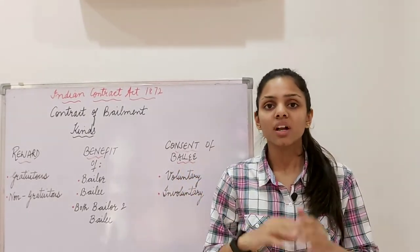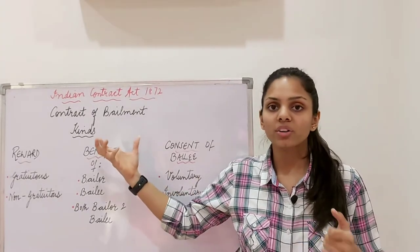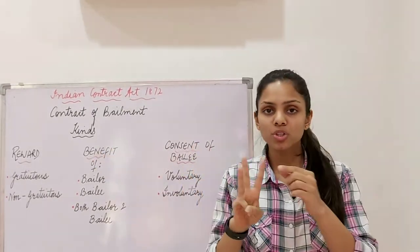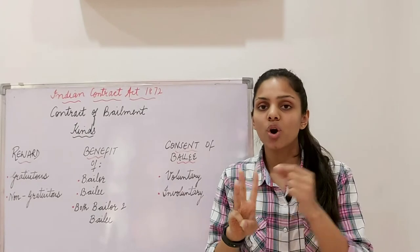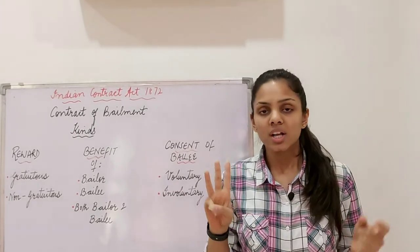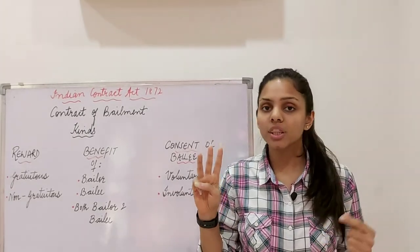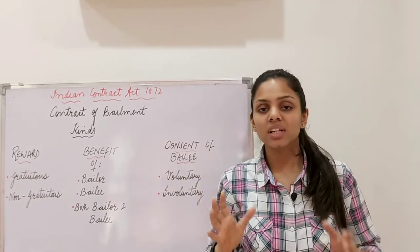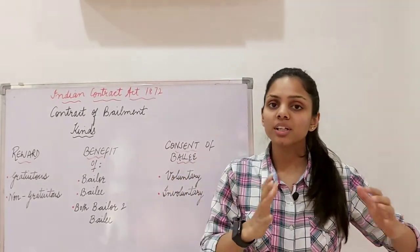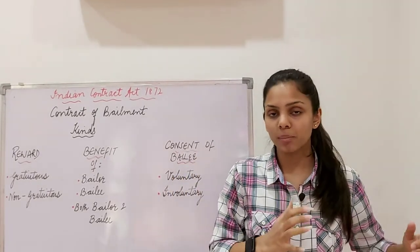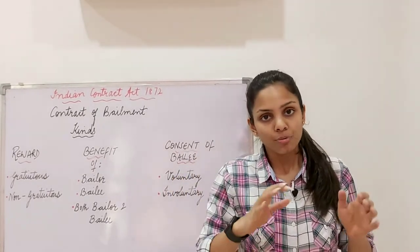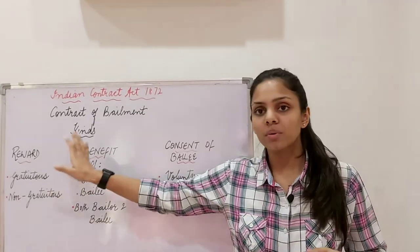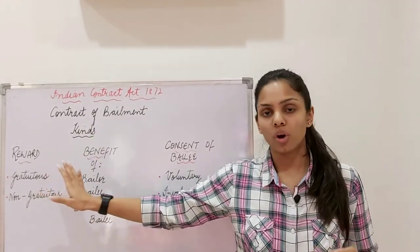Beginning with different kinds of contract of bailment — bailment is of three types. First, on the basis of reward. Second, on the basis of benefit. Third, on the basis of consent of the bailee. So we will be studying these three different kinds of bailment, and we will start with bailment on the basis of reward.